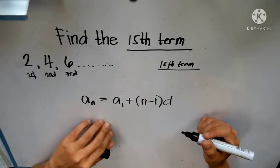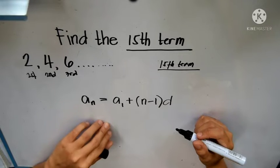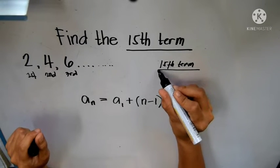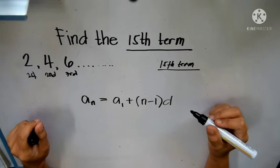This is our formula to find, in order for us to reach the 15th term easily without counting.